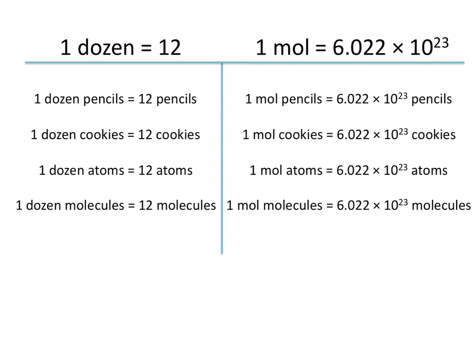Avogadro's number is a rather large number, and the concept of Avogadro's number and the mole are often concepts that are only talked about in chemistry. But the concept of a mole is similar to the concept of a dozen. So for example, if you have one dozen pencils, you have 12 pencils. Or if you have one dozen cookies, you have 12 cookies.